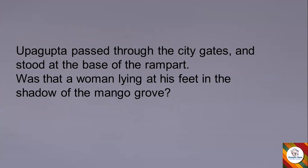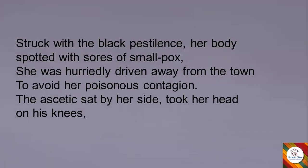Upagupta passed through the city gates and stood at the base of the rampart. Was that a woman lying at his feet in the shadow of the mango grove? He followed the music through the city gates and stood on the base of the rampart — a protective border wall. Near there, in the shadow of a cluster of mango trees, he noticed a woman lying just at his feet.